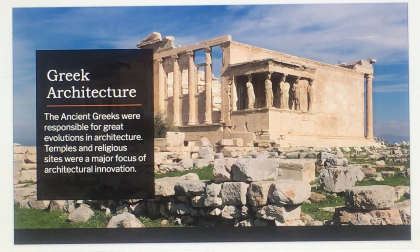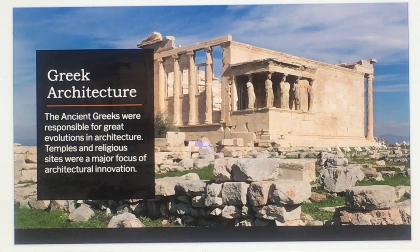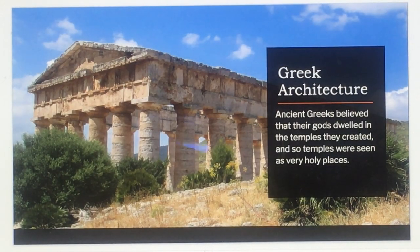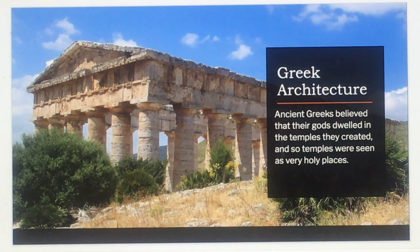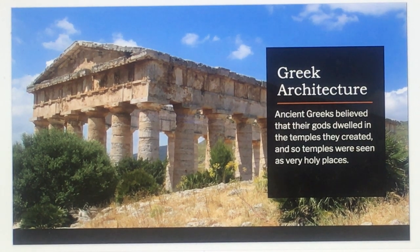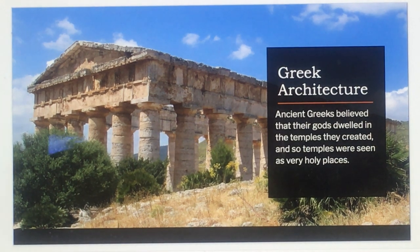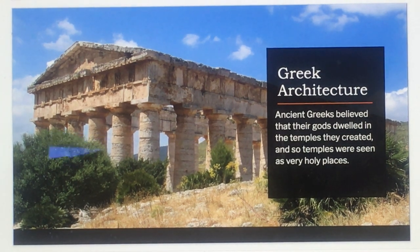The ancient Greeks were responsible for great evolutions in architecture. Religious sites were a major focus of architectural innovation. The ancient Greeks believed that their gods dwelled in temples, which were therefore seen as very holy places.